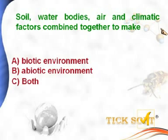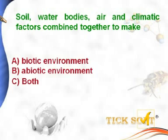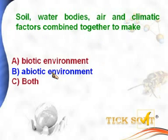Soil, water bodies, air, and climatic factors combined together make — options: (a) biotic environment, (b) abiotic environment, (c) both. Soil, water bodies, air, and climatic factors are all non-living factors, so they combine to make the abiotic environment. Option B is the answer.